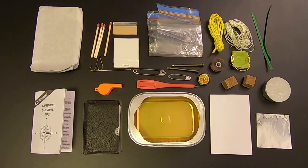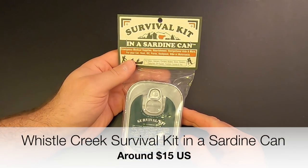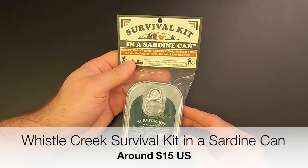So here's all the stuff from the Coughlin survival kit in a can. You know, obviously this kit doesn't have every component you would need in a survival situation. It's not the best survival kit in the world, but for what it is and for its size, I actually don't think it's that bad. And it would certainly make a good starting point for building a better kit. All right, next we'll check out the Whistle Creek survival kit in a sardine can.